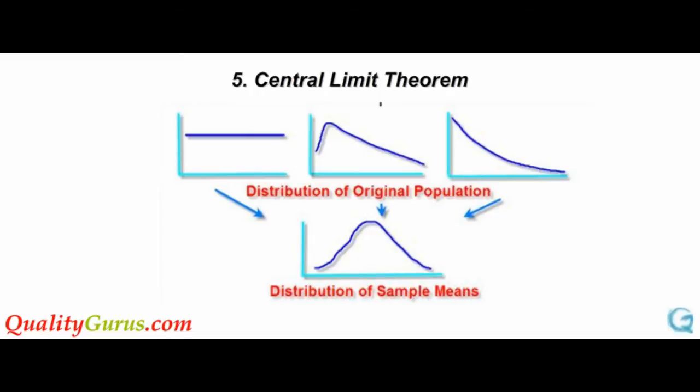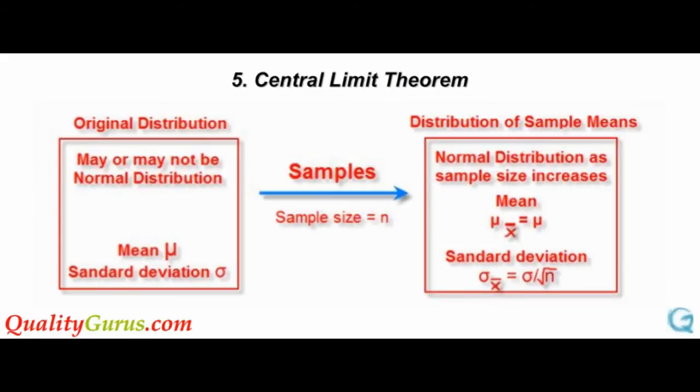This diagram shows that irrespective of the original distribution, the sample means will have the normal distribution when the sample size is large enough. If we draw random samples of size n from an original distribution, the mean of the sample means will be same as the mean of the original distribution. The standard deviation of the sample means will be equal to the standard deviation of the original distribution divided by the square root of the sample size.